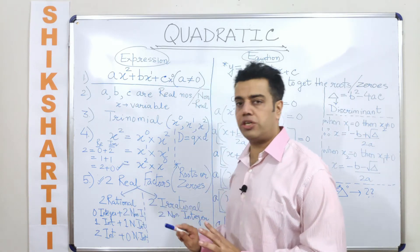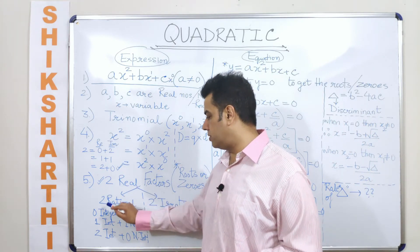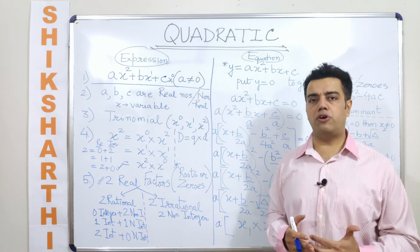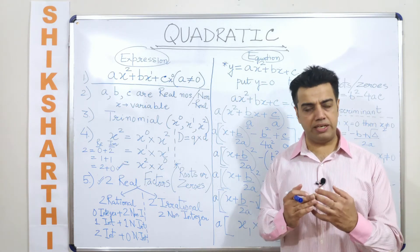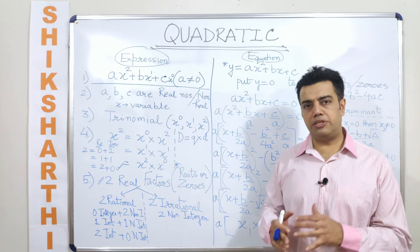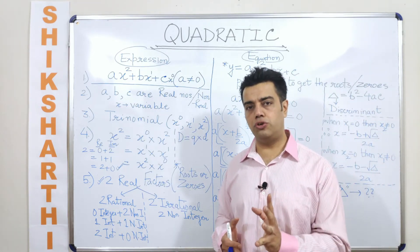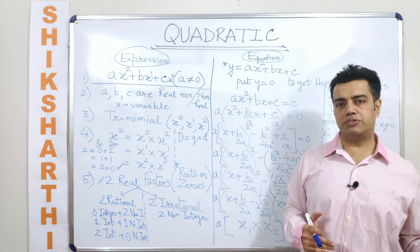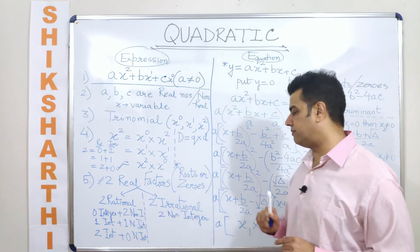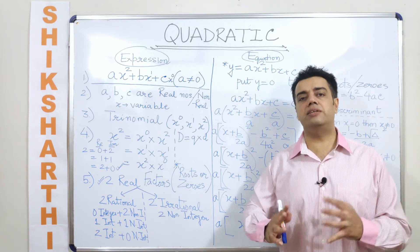These two real factors — what would be the nature of these real factors? Either both of them would be rational. Rational numbers are those numbers written in the form of P by Q, which is a numerator divided by a denominator, such that the denominator is a non-zero integer but the numerator can be any integer — negative, zero, or positive. Or it will have two irrational factors. Irrational numbers are those numbers which are written under the root sign.